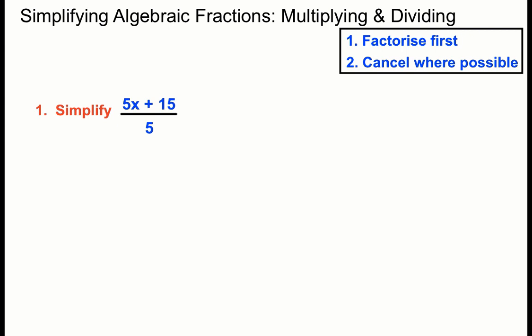Simplify 5x plus 15 over 5. You can see that 5 could go into the top, both of those top numbers. 5 can go into 5x, so we'll take 5 out as a common factor. We'll factorise the top here. 5 lots of x makes 5x and we ask what have we got to multiply 5 by to get 15, which is a plus 3.